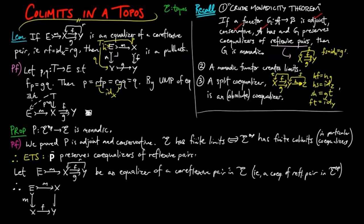Therefore, by the lemma, the following is a pullback square, and thus, by the Beck-Chevalley condition, the following commutes.